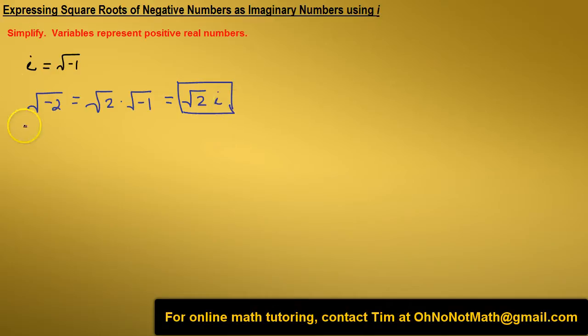Let's do another example. The square root of negative 25 equals the square root of 25 times the square root of negative 1. The square root of 25 equals 5. The square root of negative 1 equals i.